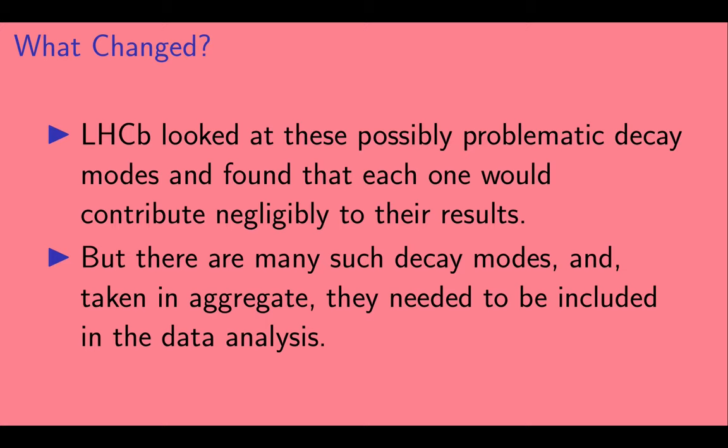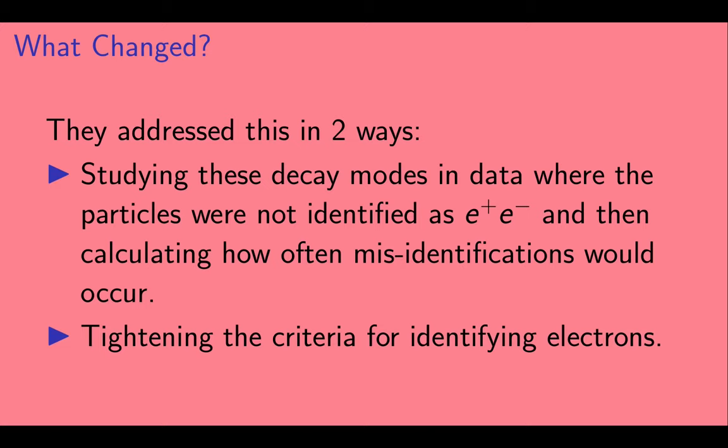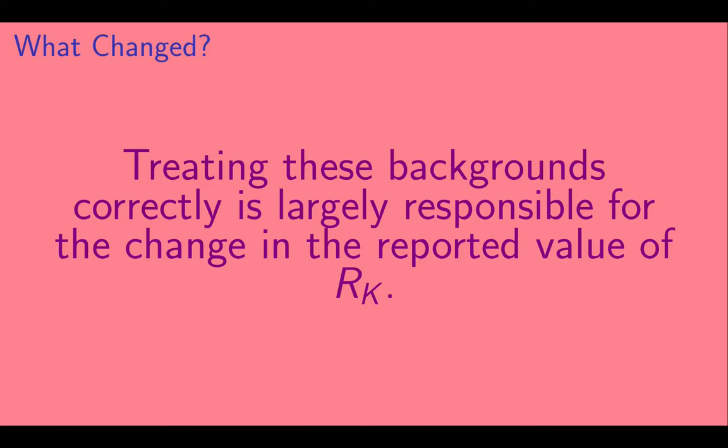LHCb looked at these possibly problematic decay modes and found that each one alone would contribute negligibly to their results. But there are a lot of these modes, and taken in aggregate, they needed to be included in the analysis. They addressed this in two ways. First, they studied these decay modes in their data, where the particles were not identified as E plus E minus. And then they calculated how often misidentifications would occur. Second, they tightened the criteria for identifying electrons so that misidentifications of particles would occur less often. Treating these backgrounds correctly is largely responsible for the change in the reported value of RK.